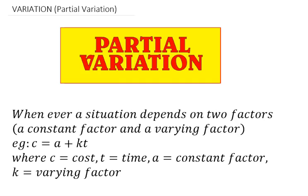Partial variation is a little bit different from all the other variations we've been doing because it involves two constants, unlike other variations which have only one constant. Whenever a situation depends on two factors — a constant factor and a varying factor — we use partial variation. We'll be making use of simultaneous equations because we'll be looking for two unknowns at the same time.